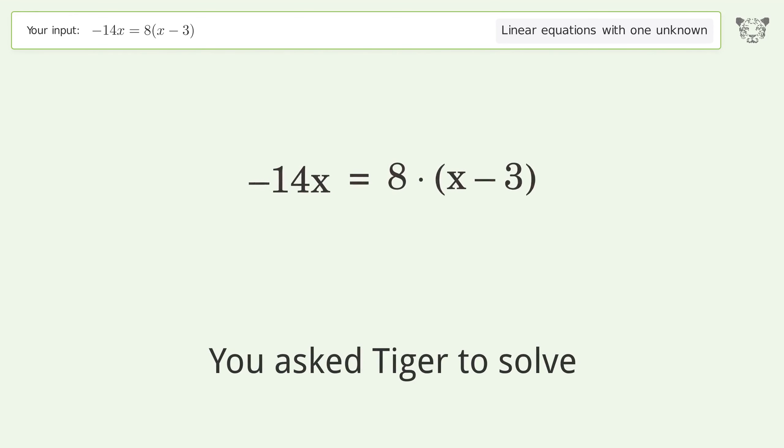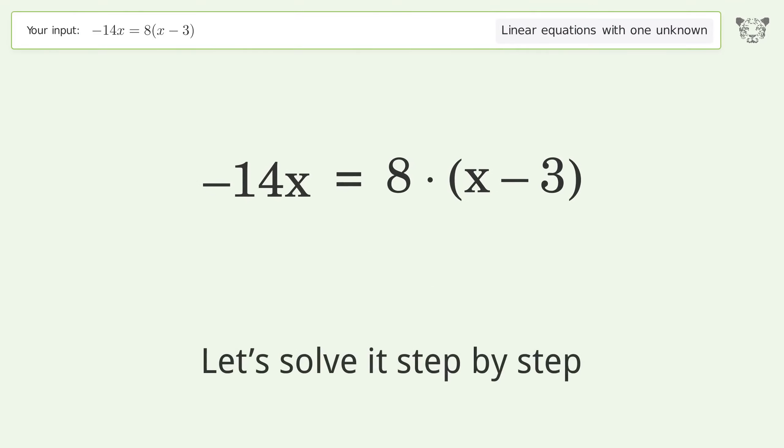You asked Tiger to solve this problem dealing with linear equations with one unknown. The final result is x equals 12 over 11. Let's solve it step by step. Simplify the expression and expand the parentheses.